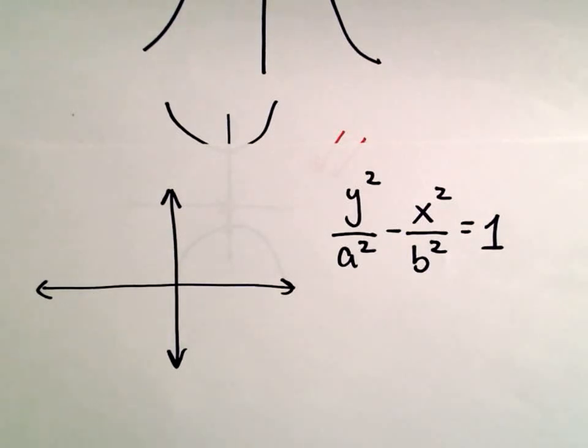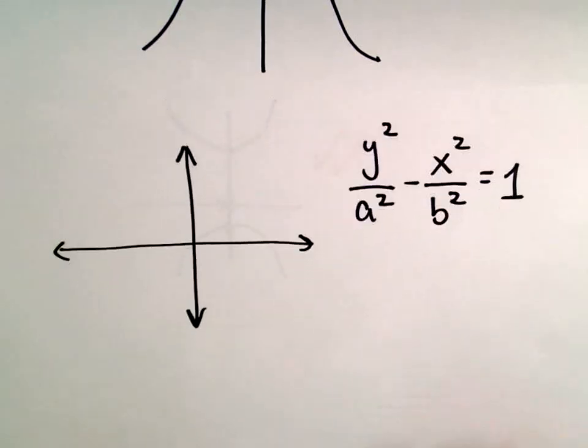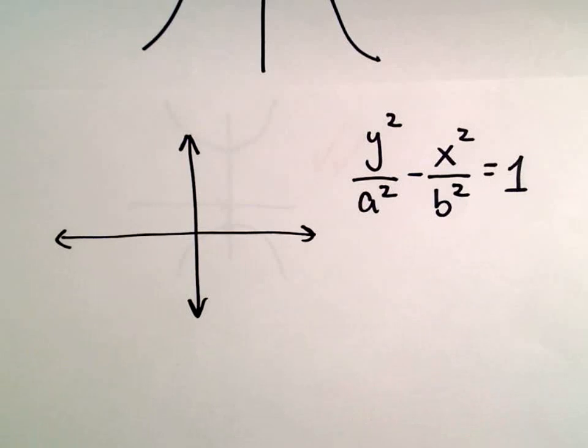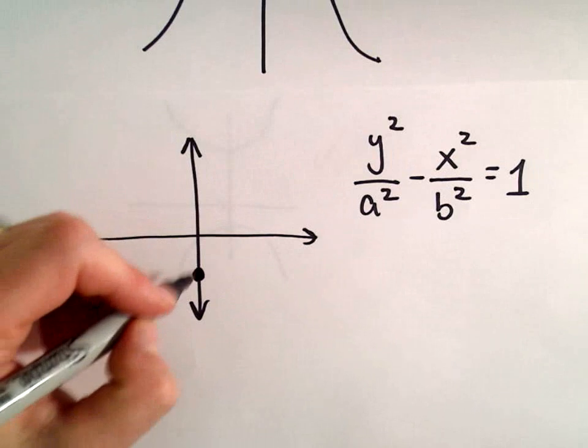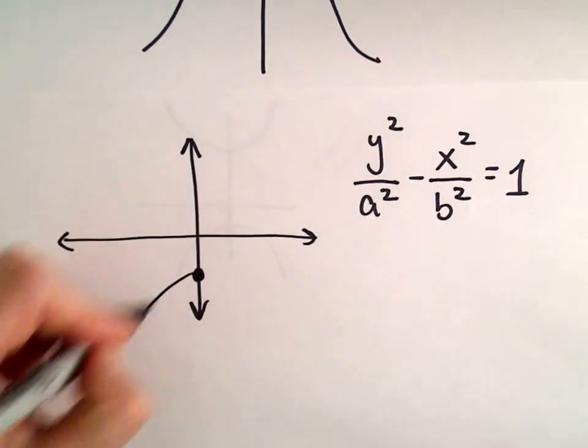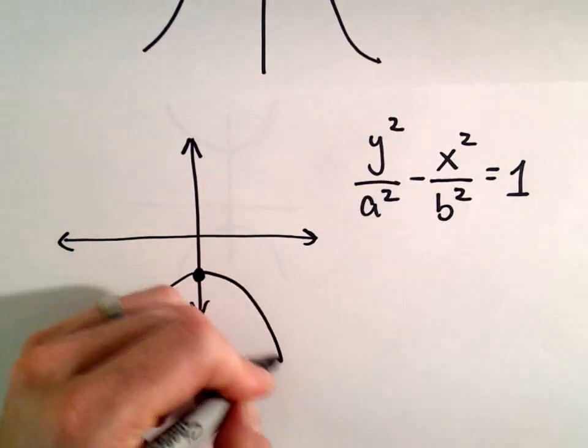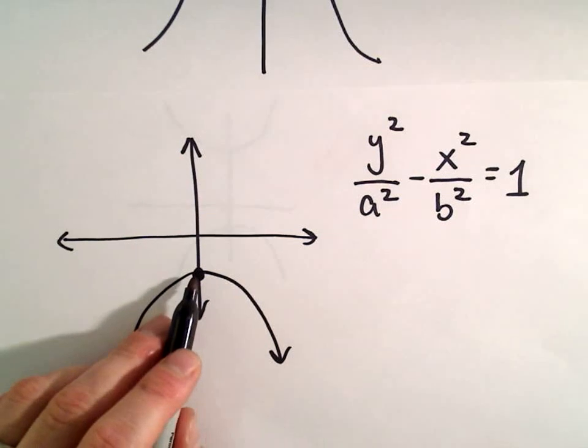So now what we need to do is just deduce the values for a and b. Okay, well, we can do that. We're told that the ship at some point is 60 miles due south of the center. Well, if it's 60 miles due south of the center, it's really going to be sitting at a vertex.